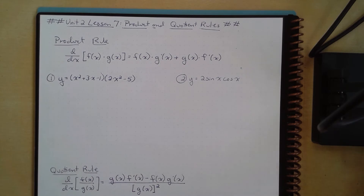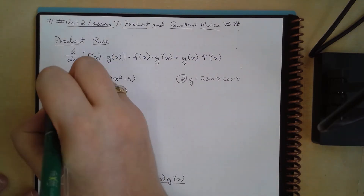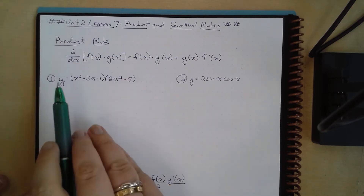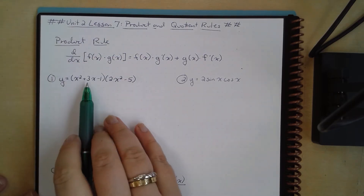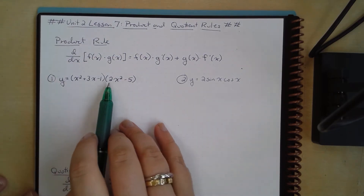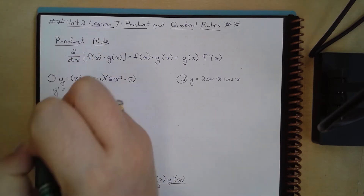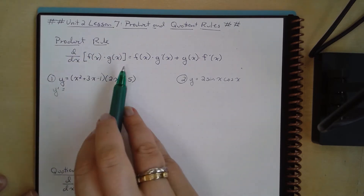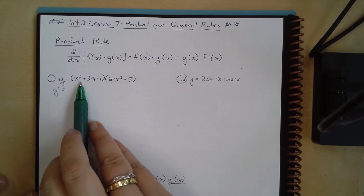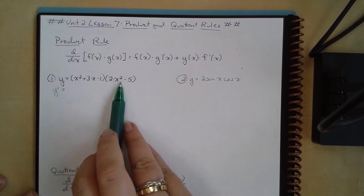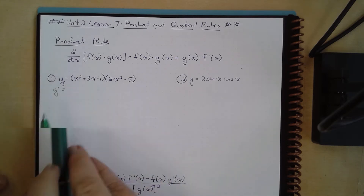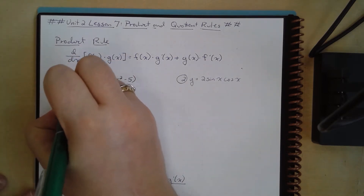It's pretty straightforward and simple, but let's put this into action. For number one, our first example, we have y equals x squared plus 3x minus 1 times 2x squared minus 5. To find our derivative, y prime is going to be equal to — I like to think of this as the first times the derivative of the second plus the second times the derivative of the first.